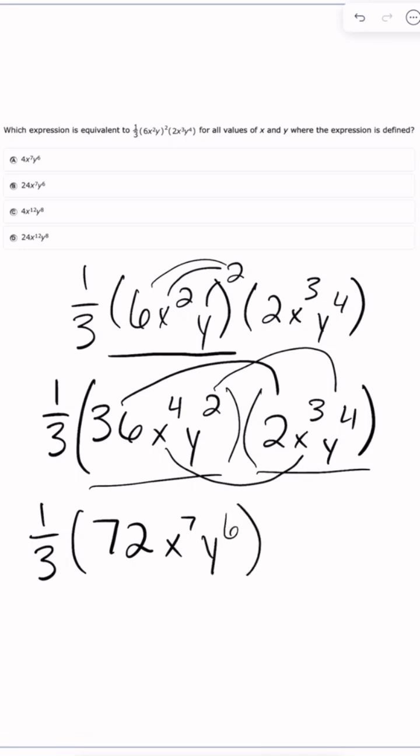And then the only other thing I have to do in this problem is take one-third and multiply by 72. So one-third of 72 is 24. Bring the rest of my answer down. And so I'm going to get 24x to the seventh, y to the sixth. And we should see that...